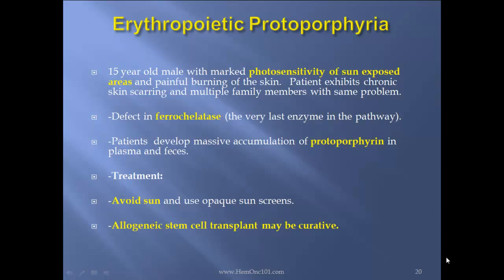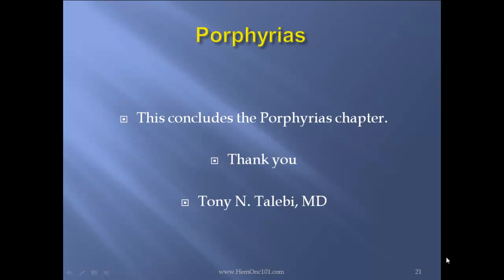Erythropoietic protoporphyria case report: 15-year-old male with marked photosensitivity of sun-exposed areas and painful burning of the skin. Patient exhibits chronic skin scarring and multiple family members with the same problem. A defect in ferrochelatase, the very last enzyme in the pathway, causes this. Patients develop massive accumulation of protoporphyrin in plasma and feces. Treatment: avoid sun, use sunscreen, and allotransplants may be a consideration. This concludes the porphyria chapter. Thank you.